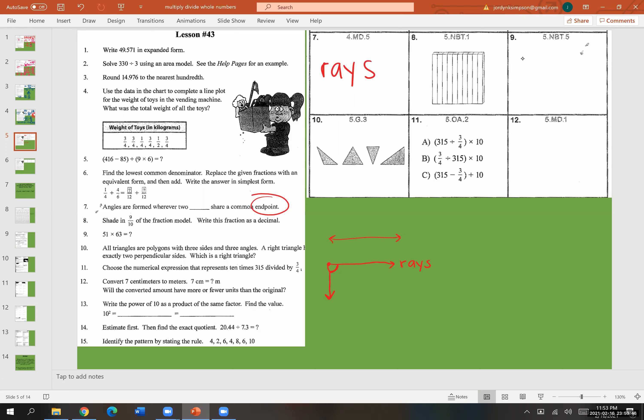Number eight, shade in nine-tenths of the fraction model. This base ten block has ten pieces in it. So if we were going to shade nine-tenths, we would shade in nine. Remember, it doesn't have to be beautiful. Now you have to write the fraction as a decimal. So to write nine-tenths as a decimal, it would be a decimal point and a nine. That is nine-tenths.